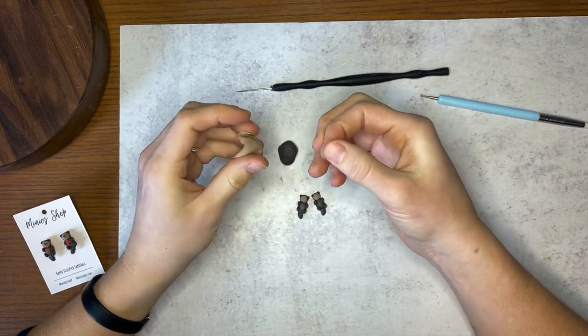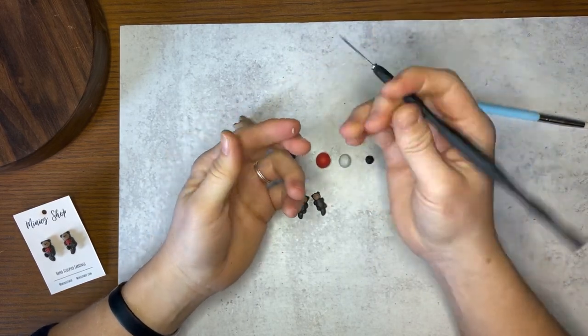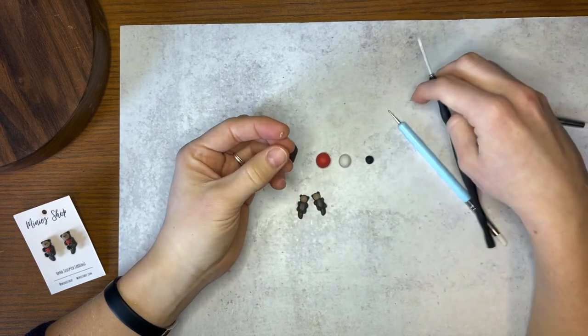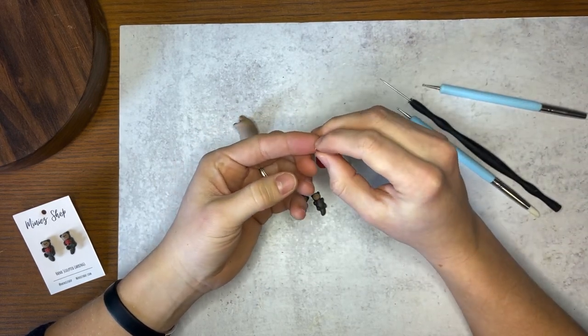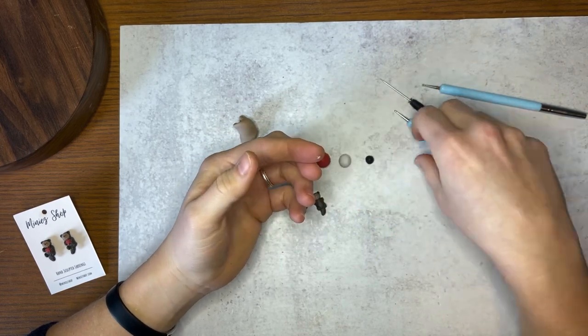Next, we'll take a tiny bit more of our light brown clay, about as much as we took for one of the ears, and we're going to split that in two. Now when we're splitting things this small in two, sometimes I take the potter's needle, and just press it to split it in two. Once that's split into two, we will split it into two again.